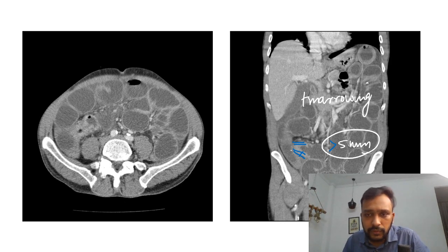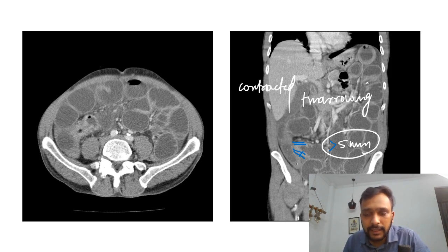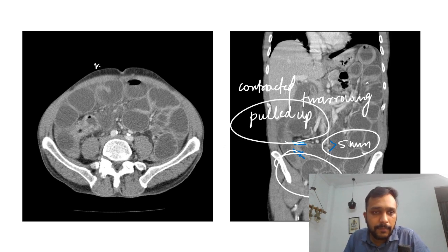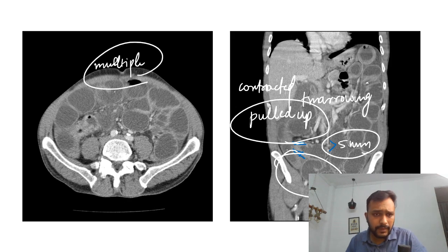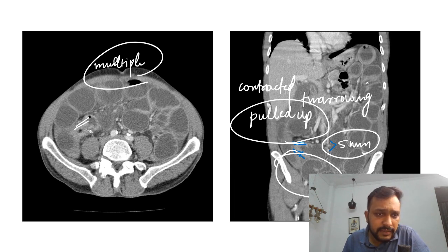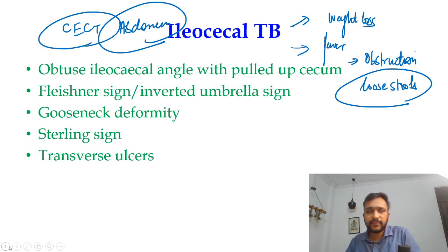You will also see that the cecum will be contracted — it will not lie within the pelvis; rather, it will be pulled up. You will also see multiple lymph nodes in the mesentery. On imaging, there is circumferential enhancing thickening of the terminal ileum extending for a length of five centimeters.